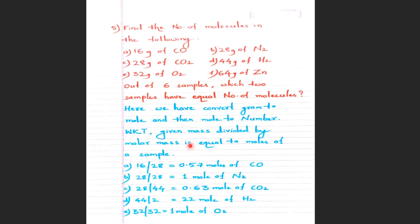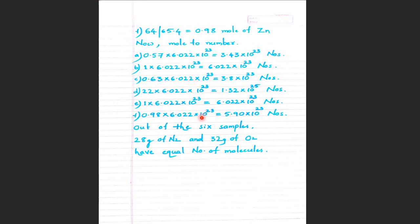The last example is easy — a Class 9-level problem. Out of six samples, which contain equal numbers of particles or molecules? Convert the mass of each sample into number of molecules using the mole concept. The answer: 28 grams of N₂ and 32 grams of O₂ have equal numbers of molecules, because both represent exactly one mole. Please practice these numericals daily. We will discuss five to six numericals every day until the chemistry exam. Thank you, dear friends.